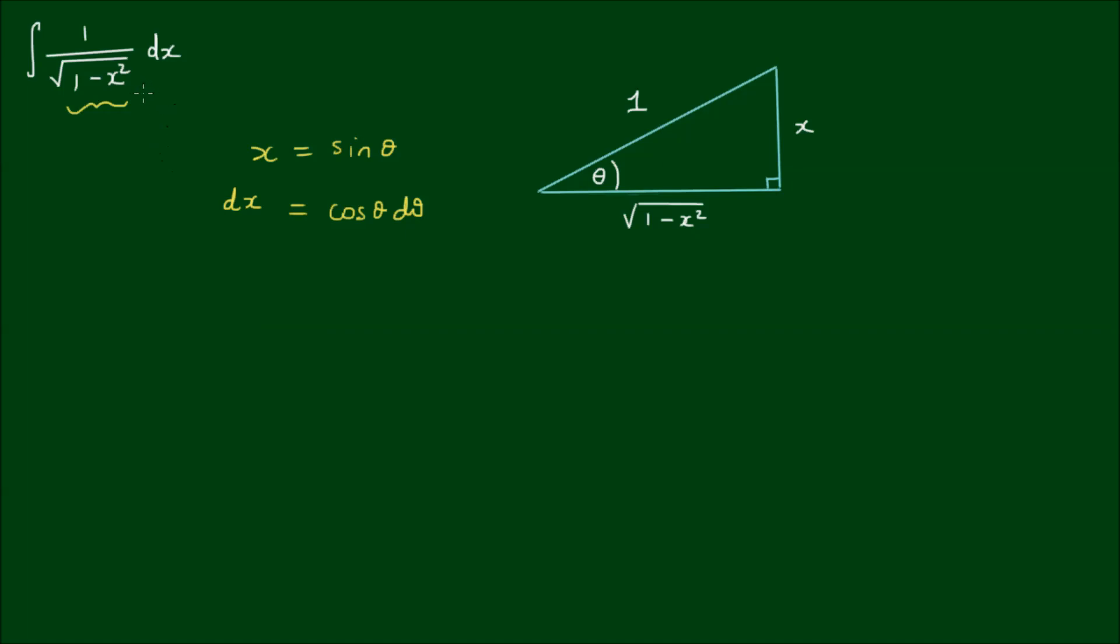And if I substitute x equals sine theta into the radical here, the integral then becomes the integral of 1 over the square root of 1 minus sine squared of theta. And dx is equal to cosine of theta d theta.